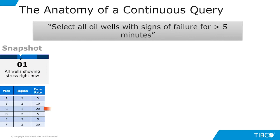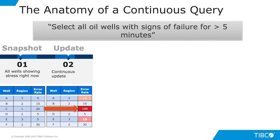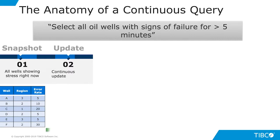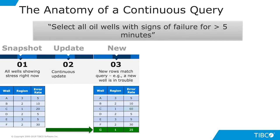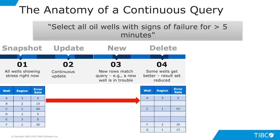Like your brain, the continuous query processor constantly looks at every incremental change in data and updates the result set. So for example, values might change showing that a well is showing an increase in the chance of failure, or a new well is detected as having a sign of failure.